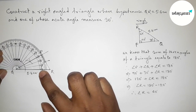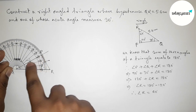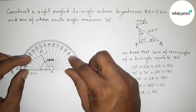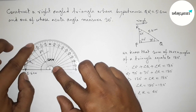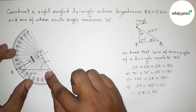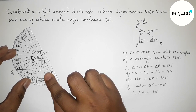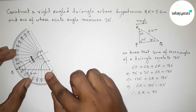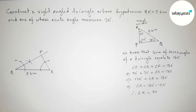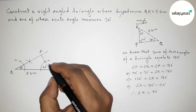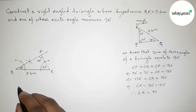Now checking all angles with a protractor. Angle Q measures perfectly 30 degrees. Angle R measures perfectly 60 degrees. Finally, checking angle P — it is also perfectly 90 degrees. So angle Q equals 30 degrees, angle R equals 60 degrees, and angle P equals 90 degrees, confirmed with the right-angle symbol.